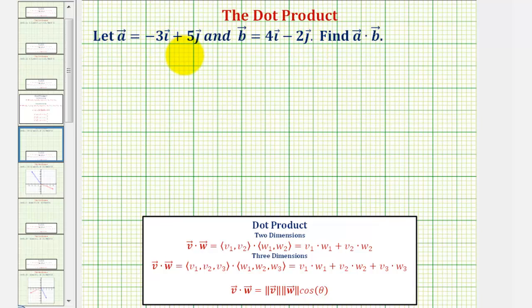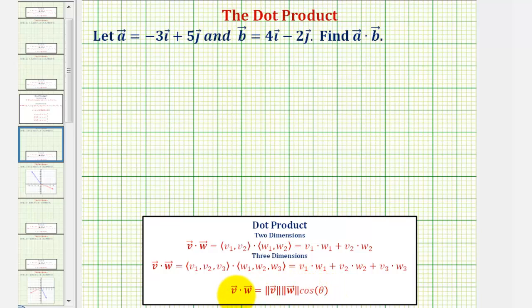We're given vector a and b and asked to find the dot product of vector a and b. To find the dot product of two vectors, we find the sum of the products of the corresponding components. The value of the dot product does give us information about the angle theta between the two vectors, which we'll discuss more about after our first example.